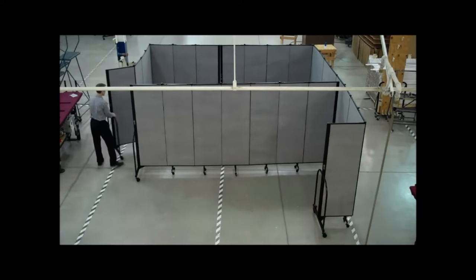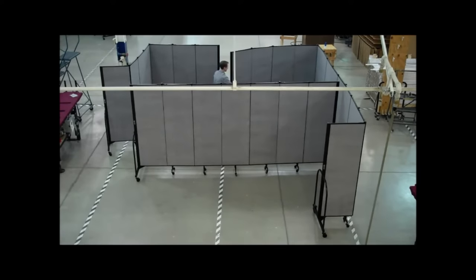To make a door to close off a space, move the panel on the end or move two panels to make a double door.